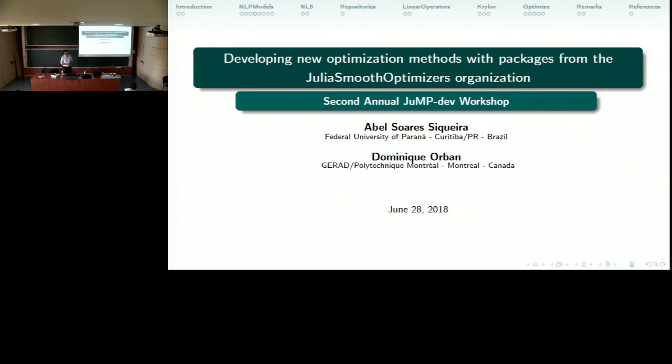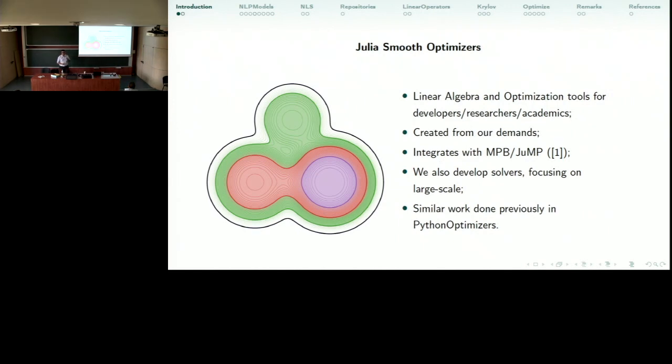I'm gonna present to you a few packages of the JuliaSmoothOptimizers organization. It's a bunch of packages for nonlinear optimization, continuously mainly, and some linear algebra packages. It's a joint work with Dominique and a few other collaborators. These packages are created from our demands. So we have our research projects and they are being developed by what we are focusing on at the moment. So they are slowly being developed.